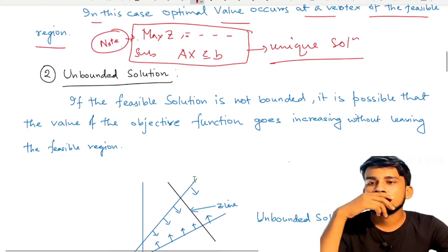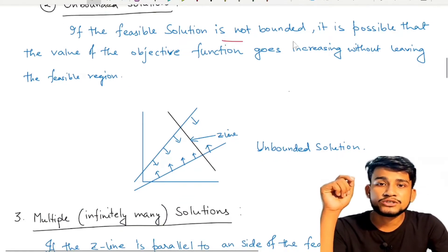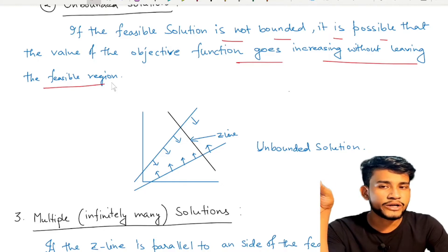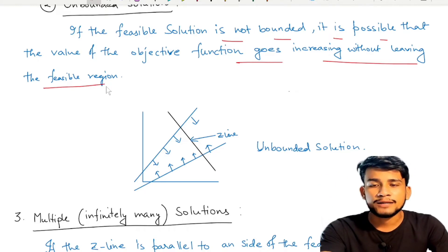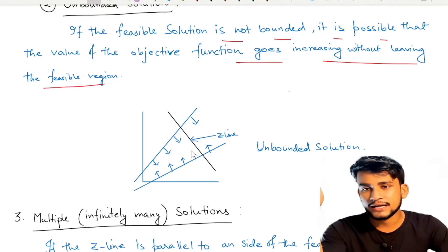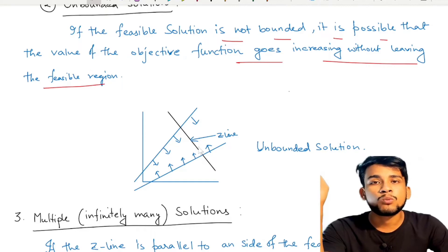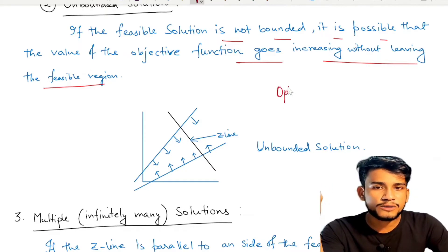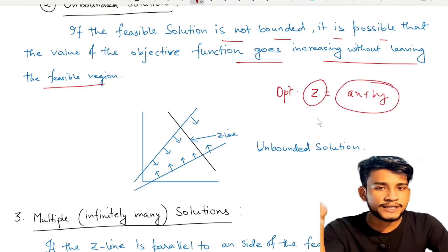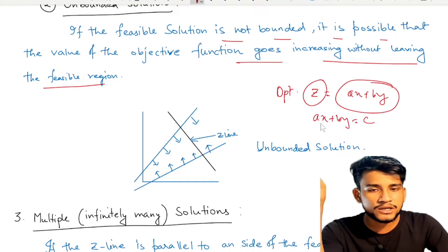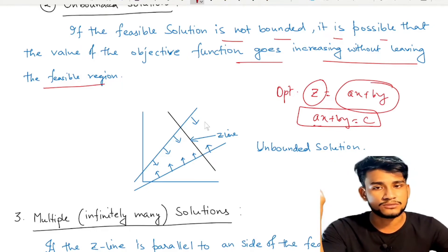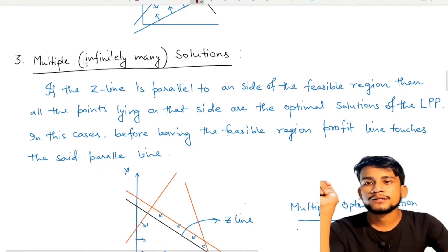Case 2 is unbounded solution. If the feasible region is not bounded, it is possible that the value of the objective function keeps increasing without leaving the feasible region. If this case occurs, we say the LPP has an unbounded solution. Suppose we get two constraint lines with the feasible region on one side, and the z-line — that is, the line ax + by = c for a fixed value of z — lies in that direction. Then we say this is the case of an unbounded solution.